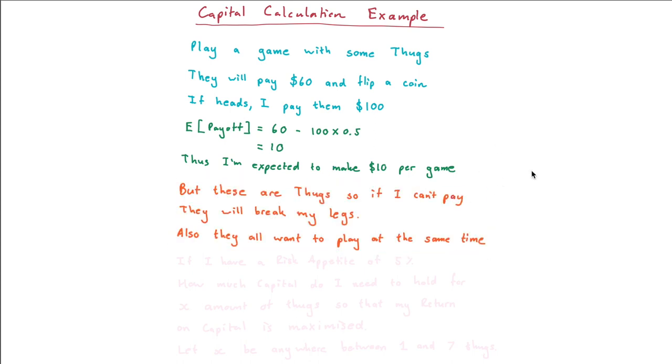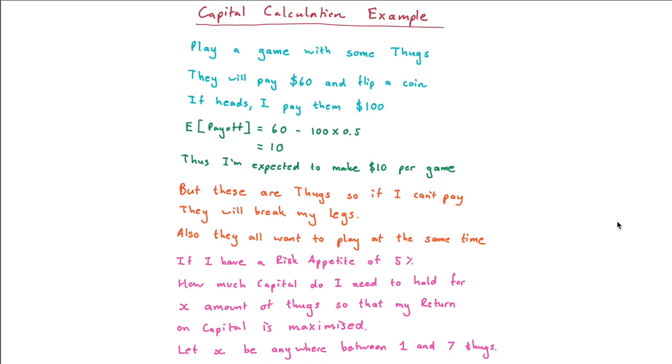However, these are thugs. And if I can't pay, they will break my legs. Also, a whole bunch of thugs want to play the game at the same time. Now, let's say I have a risk appetite of 5%. That means I am prepared to risk my legs getting broken with a 5% chance of that happening.